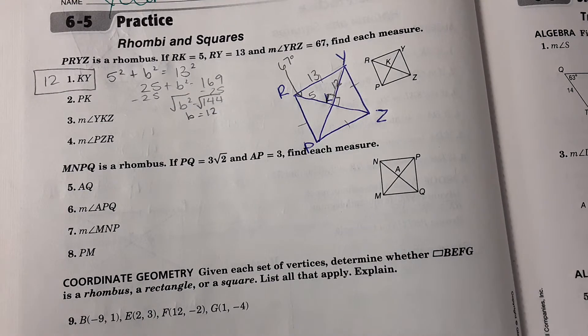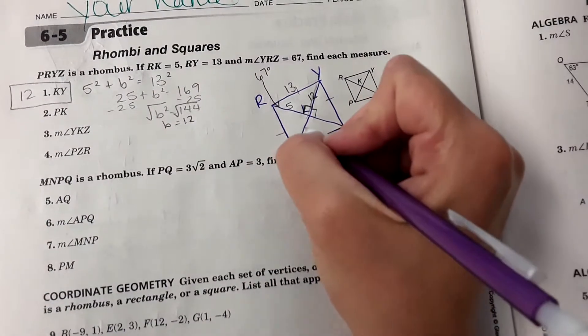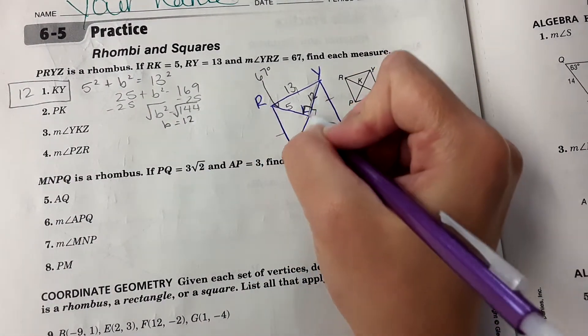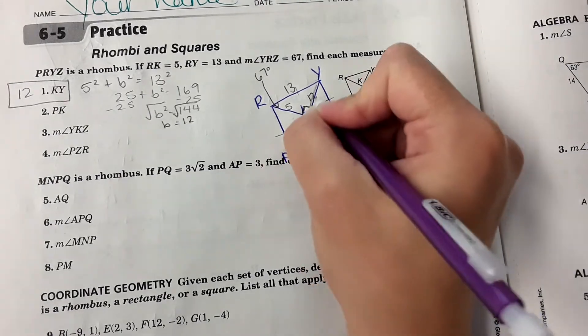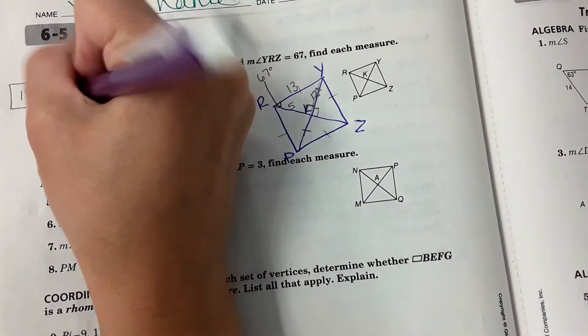It gets easier from there. PK, this distance right here, it is a parallelogram. So therefore, these diagonals bisect each other. So this is the same length as this, and we already found that that length is 12. So PK is also 12.